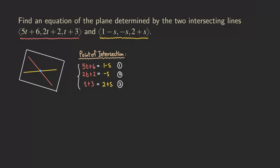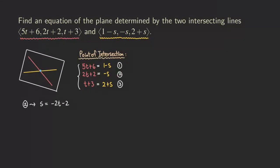Usually when solving this kind of system, the easy way is to find one equation that's easy to solve for one of the variables and then make the substitution. The easy one is equation 2. For equation 2, if we multiply both sides by negative 1, we get s = −2t − 2.